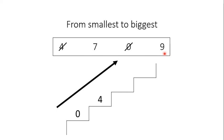Now there you can see two numbers left: 7 and 9. So which number is smaller? 7. And now this is the only number left, which is 9.